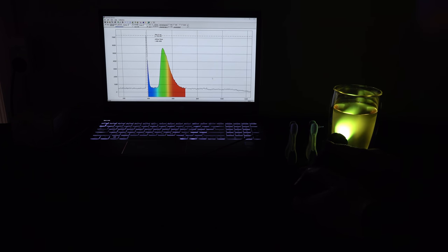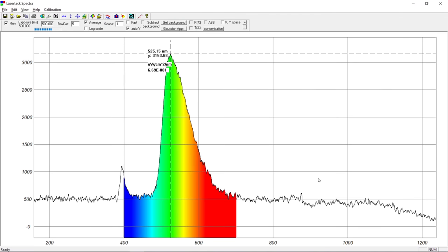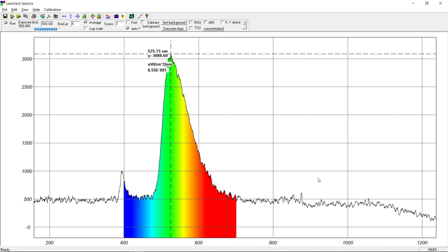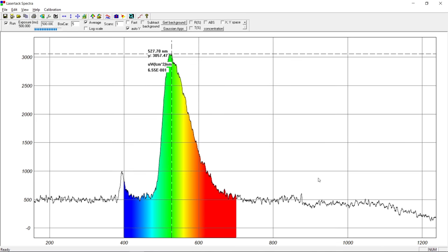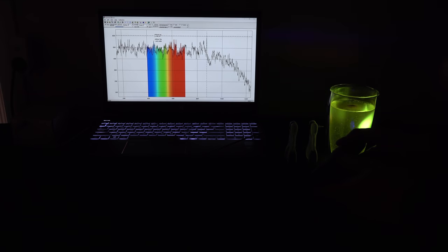This is the emission spectrum from the Monster Energy drink when excited by the UV flashlight. The drink is a complex mixture, but the emission peak is in the green around 525 to 527 nanometers. How will this compare with a vitamin B pill dissolved in vinegar?